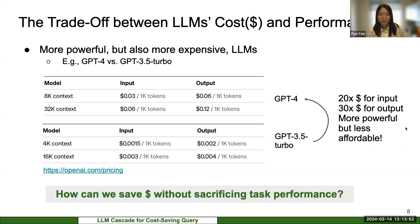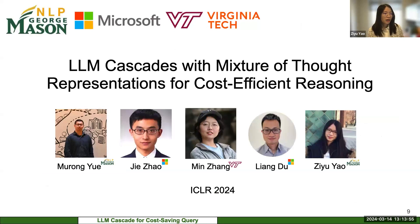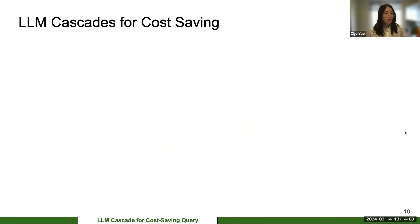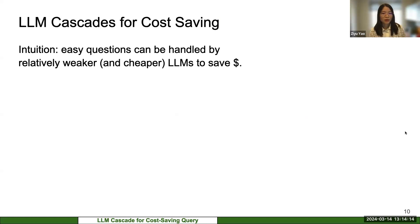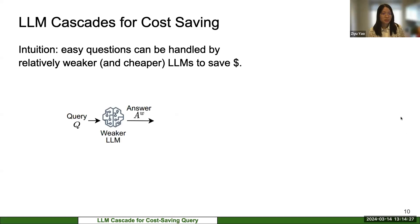I'll introduce our work recently published at ICLR 2024, in collaboration with Microsoft Research and Virginia Tech. Our idea for cost saving is straightforward: send easy questions to the weaker but cheaper language model to save money. This inspired us to build an LM cascade pipeline.